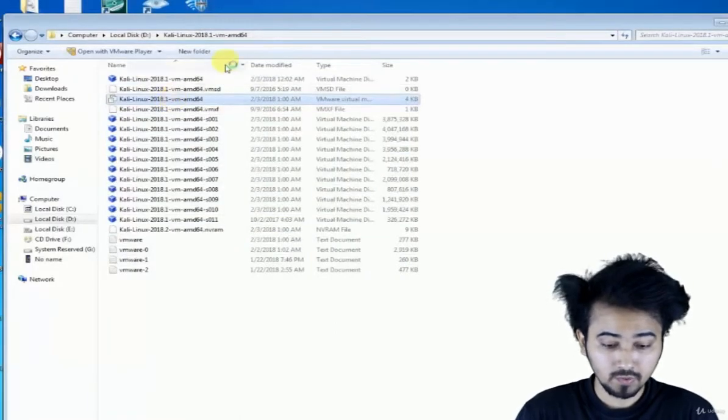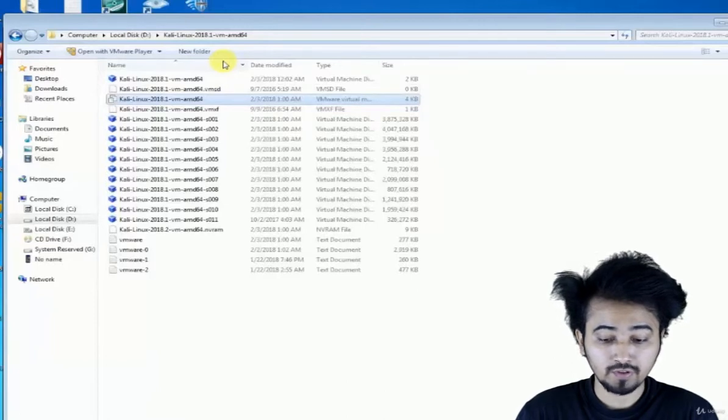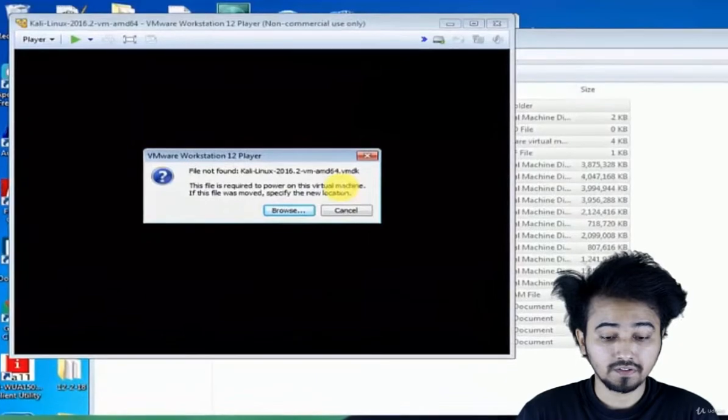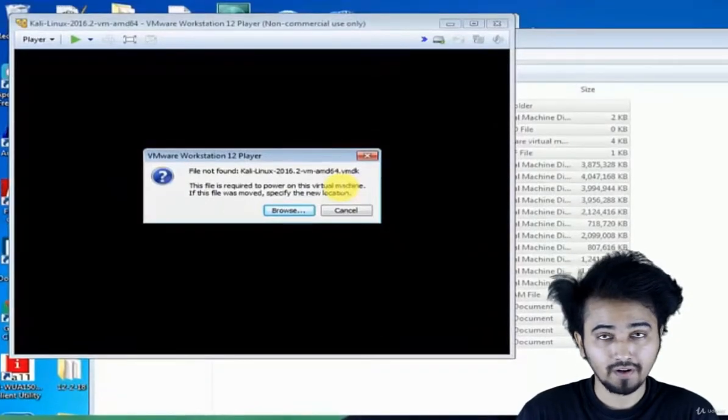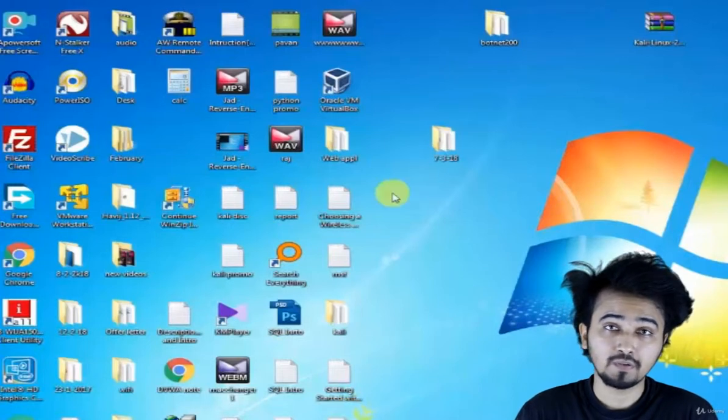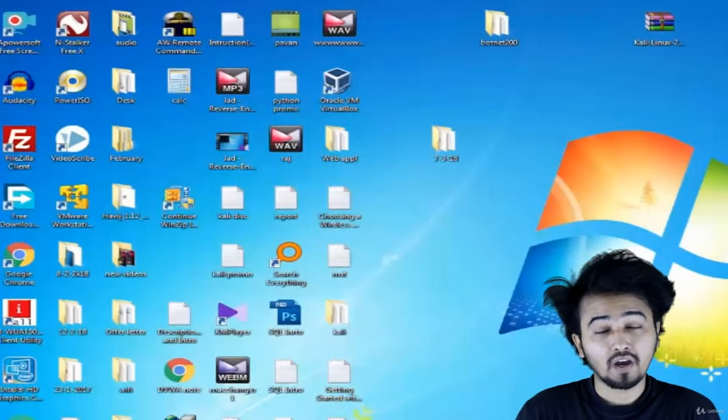You can see the virtual machine configuration file. Double click on Kali Linux 2018 VMware 64 virtual machine configuration file. You can see that Kali Linux started up in VMware. This is how you set up Kali Linux operating system in VMware, which I recommend to my students all the time.